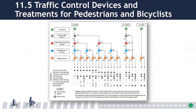Where sidewalks or shared-use paths are more than 25 feet from the roadway, the chart and treatment descriptions in Section 11.5 can be used to determine the appropriate traffic control devices based on train speed, assessments covered in earlier sections, and the number of tracks present. This section also discusses the layout and design for signing and marking, flashing light signals, automatic gates, and supplemental treatments including Z-crossings, pedestrian swing gates, channelization, and supplemental illumination.